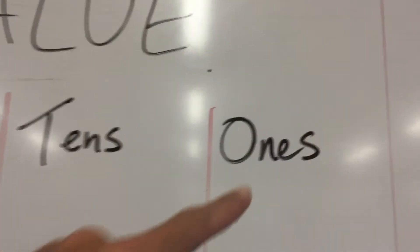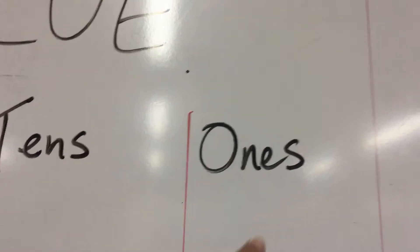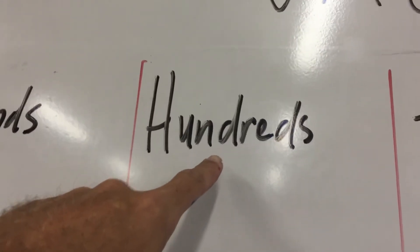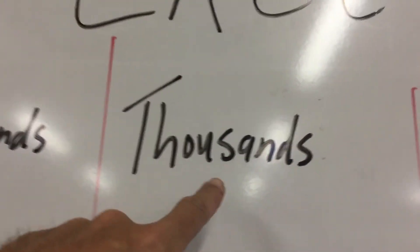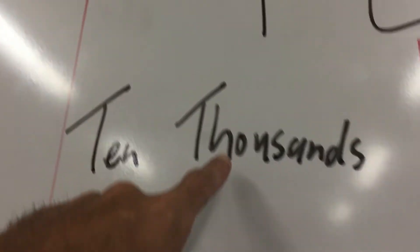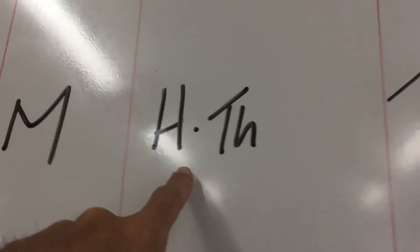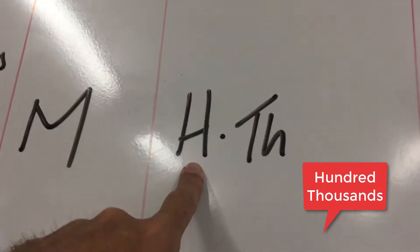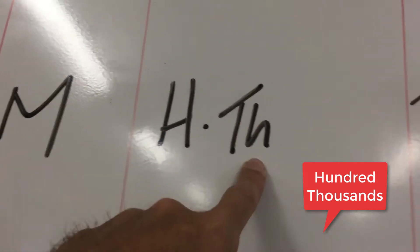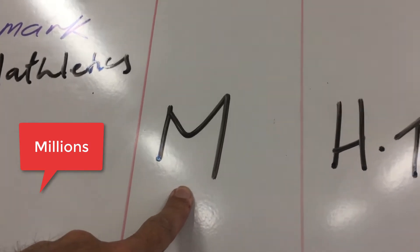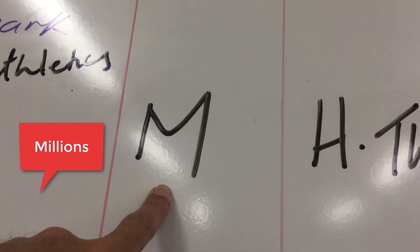Look, down the bottom we've got the ones. Up there we've got the tens, then we've got the hundreds, then we've got the thousands, then we've got the ten thousands, then we've got the hundred thousands — that H stands for hundred thousands — and this M here stands for millions, which is the same as thousand thousands. So that's the place value chart close up.